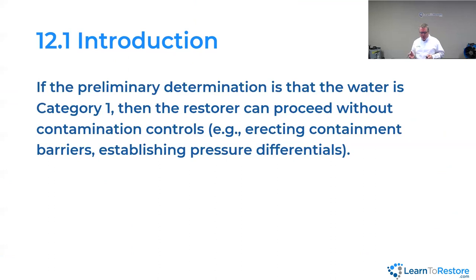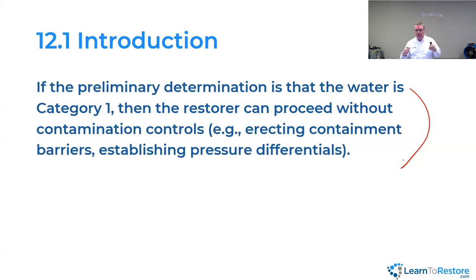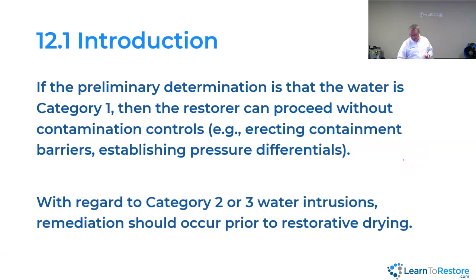Section 12.1 says if it's category one, you don't have to have contamination controls — you can keep moving. The message I get from that is: if it's category two or three, you do have to have engineering controls. With category two or three, you need to remediate before you dry. You remediate using engineering controls, containments, air pressure differentials — all those things. The standard says prevent contaminants from spreading into uncontaminated areas, and you should maintain negative pressure. If it's grossly contaminated — category three — then it says you shall do this, because now you're getting into OSHA-type employee protection requirements.